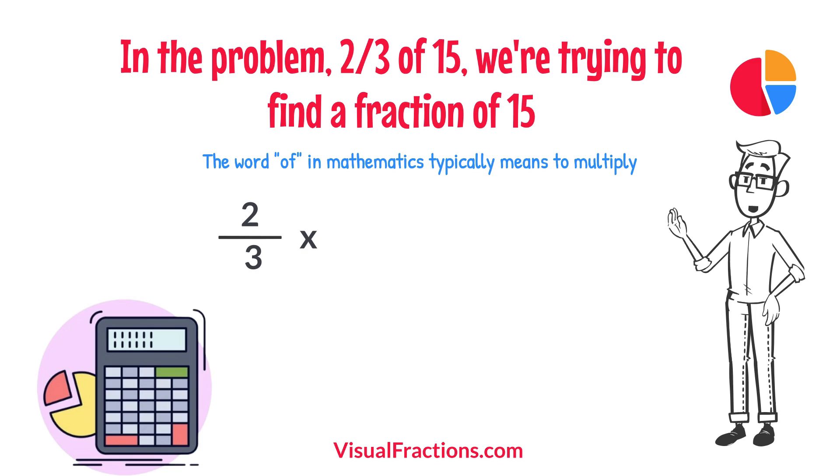Two-thirds times 15. To simplify the calculation, we first convert our whole number into fraction form, writing 15 as 15 over 1. This transformation makes it easier to work with our numbers as fractions.